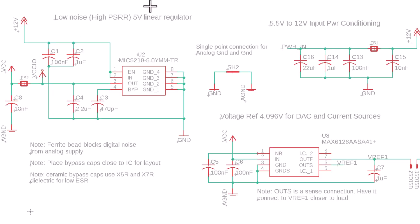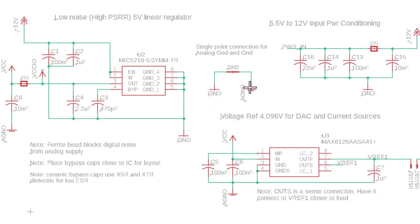Looking quickly at the schematic, here is our single-point ground connection. GND is our noisier ground and AGND — analog ground — is our quieter, less electrically noisy ground. That's where we have the voltage reference and the DAC.